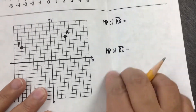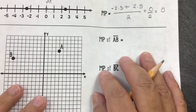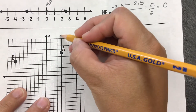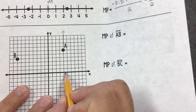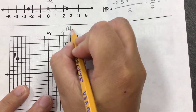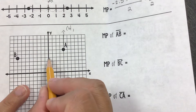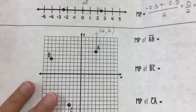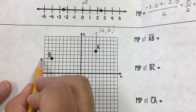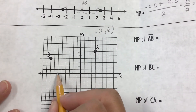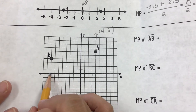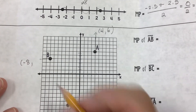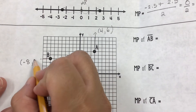When we open it up, we first need to get the ordered pairs of these points. The first point A has an x value of 4 and a y value of 6. For point B, we go 8 units in the negative direction, making the x value negative 8, and 4 units positive for the y value, giving us the ordered pair (-8, 4).